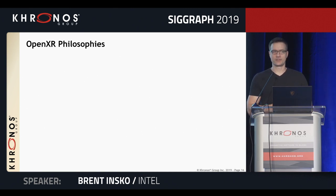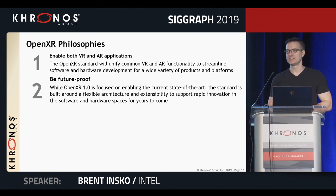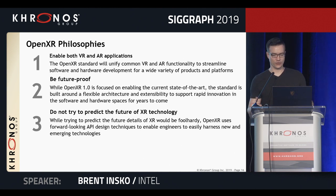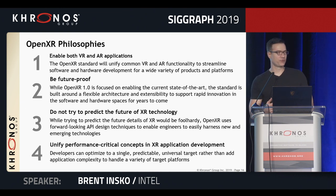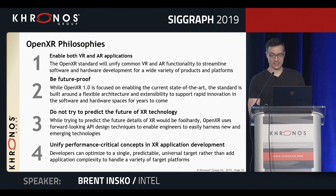Stepping back to give some insight into our philosophy when developing OpenXR: we looked to enable both AR and VR applications. Two, we wanted to be future-proof — not baking anything into the first version that we would regret later. Three, don't try to predict where the technology is going; instead build around a flexible architecture so we can extend it going forward. Four, XR is one of the most performance-critical use cases on any system today, so we wanted to enable optimized access to the underlying platforms — reducing and hiding latency is critical to success and to making sure people don't get sick.